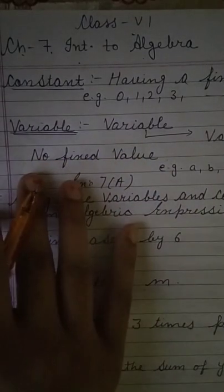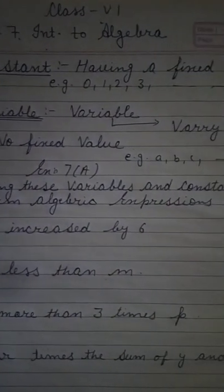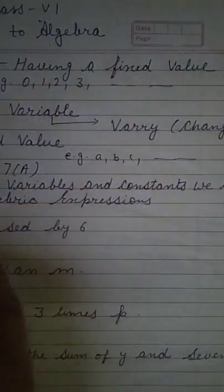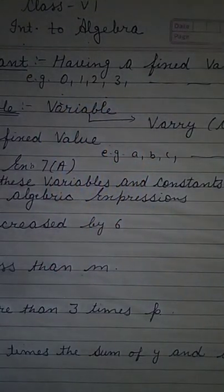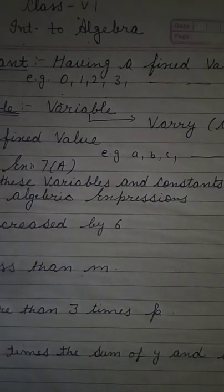This topic is called Algebra. There are two main things: constants and variables. What are constants? Constants — clear from the name — are those things which have a fixed value. Those numbers which have a fixed value are known as constants. For example, mathematical numbers always represent a fixed value. That's why they are known as constants.